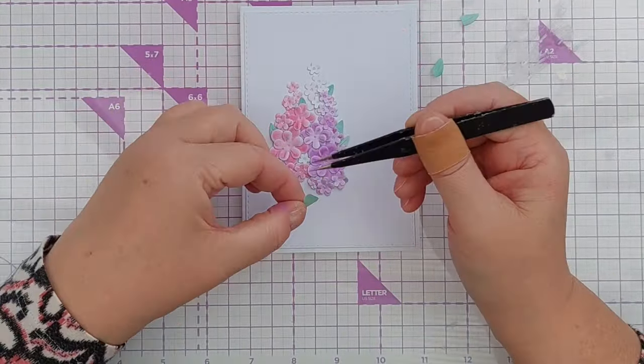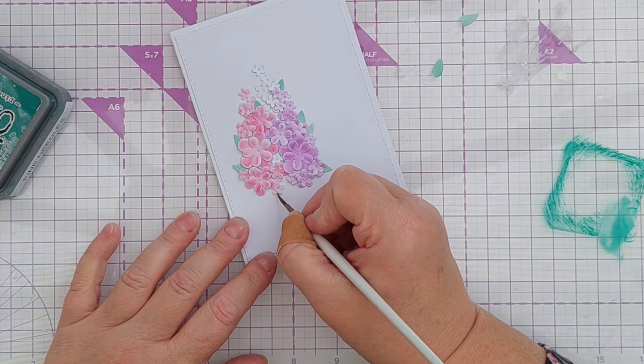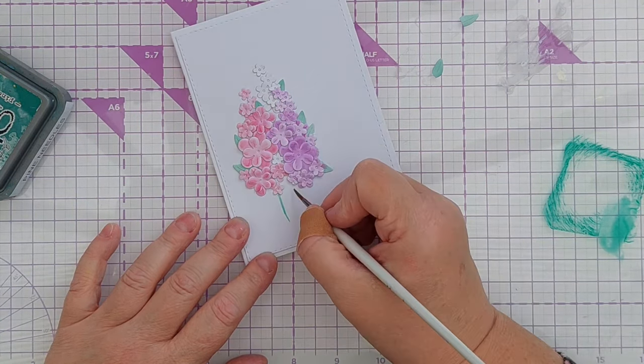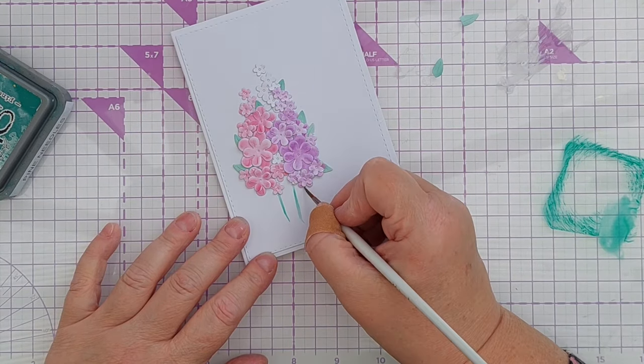So for my stems I used the same green ink, smushed a little bit on my mat, picked it up with a wet paintbrush and painted it on. Kind of natural but not worrying if it didn't look like a salvia stem.